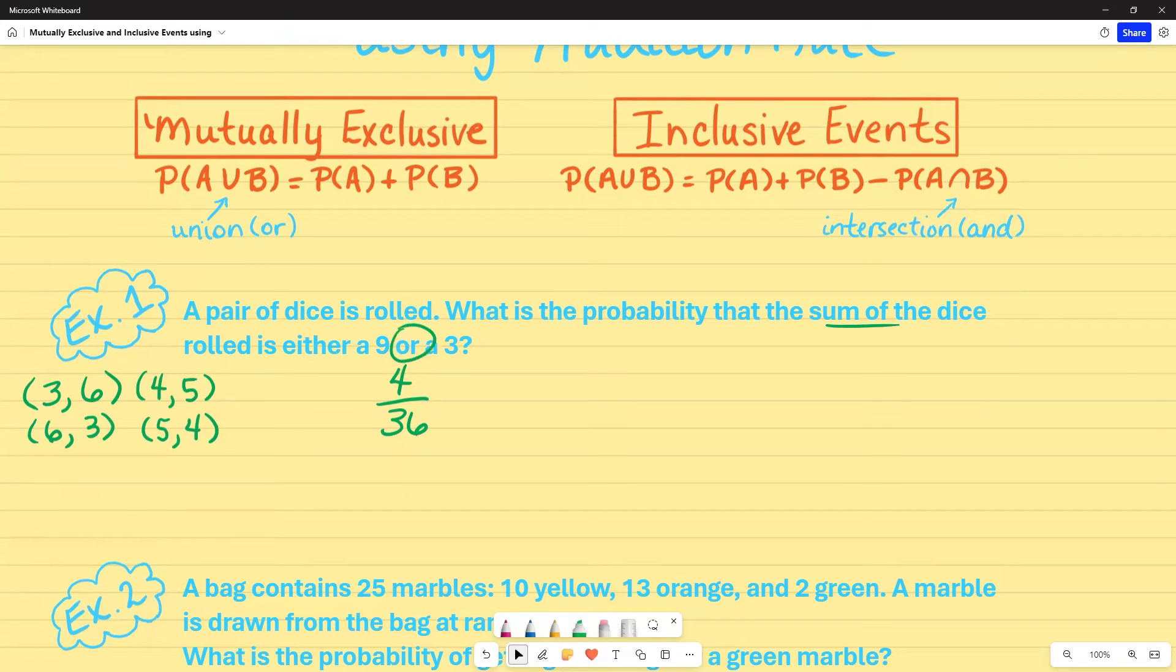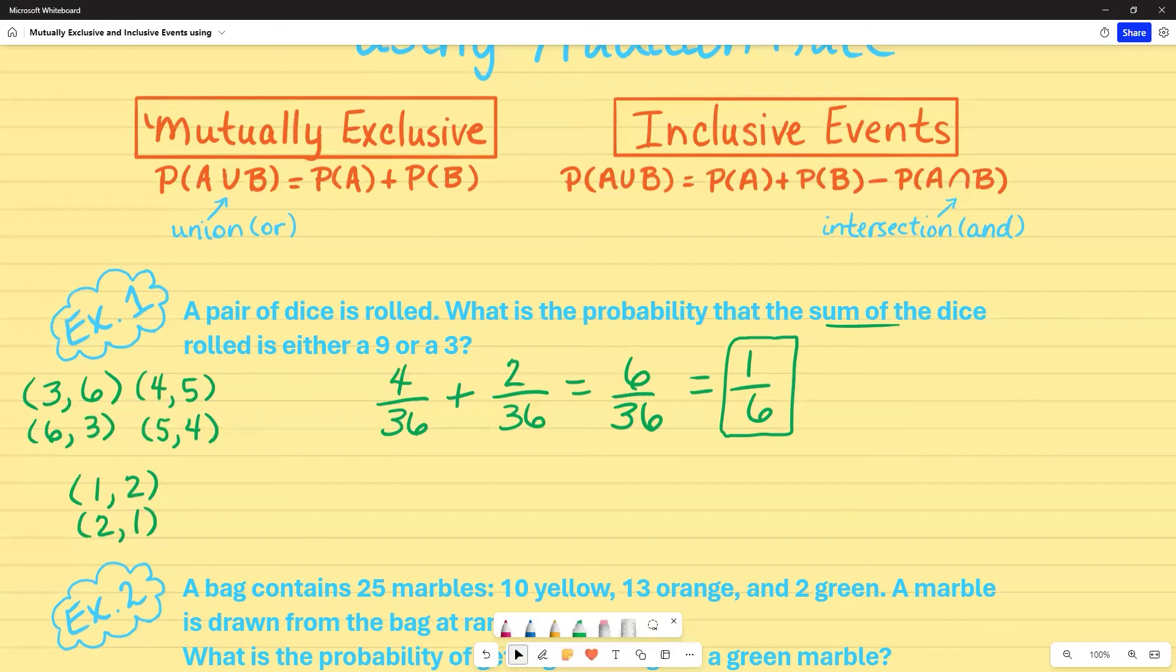Then I see the word or, so that tells me that I'm going to add. I still have 36 outcomes for my dice. And so what I want to do is try to find the sum where it's going to equal three this time. My first die could be one and my second two, or my first die can be two and my second one. So I have two this time. And when I go ahead and add that up, that's going to give me six out of 36. But you always want the simplified version. So I can divide both of those by six, which leaves me with one over six.